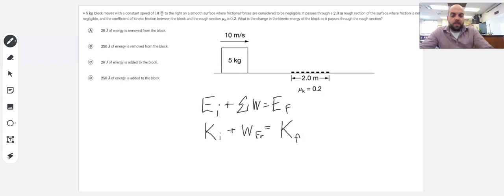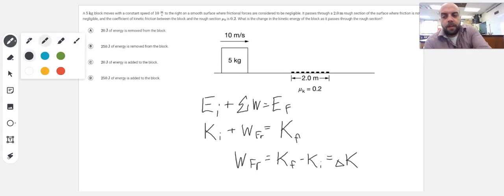So the work done by friction is actually what we're looking for here. Because if I subtract K initial to the side, I get K final minus K initial, which equals the change in kinetic energy. That is what we're talking about here.